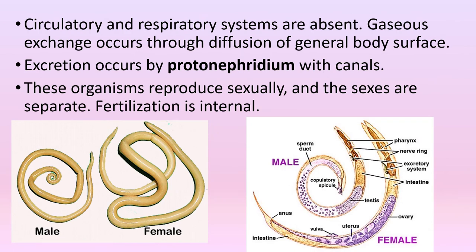Circulatory and respiratory systems are absent. Gaseous exchange occurs through diffusion of the general body surface. Excretion occurs by protonephridium with canals. A protonephridium is a network of dead-end tubules lacking internal openings.